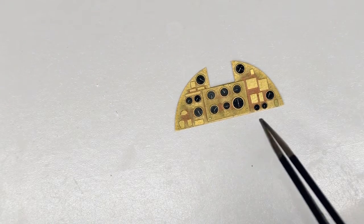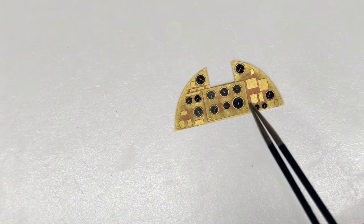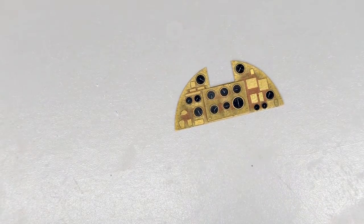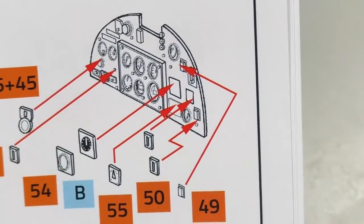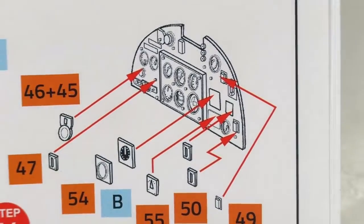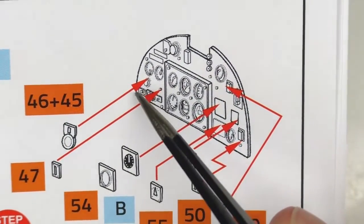Okay, so here we've got the photo etch panel. You can see the center panel sandwiched on top providing a bit of extra depth. And we've got the instructions showing where more things go. So, I would draw you right here to do this 46 plus 45 going here-ish.